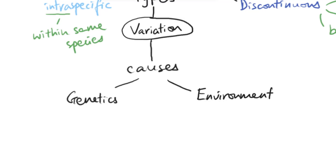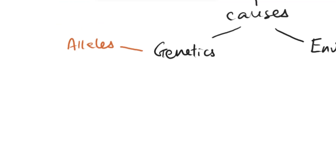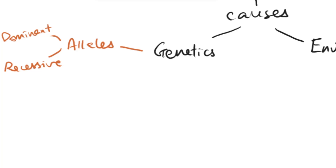Specifically, we're going to look at the genetic causes of variation and the different things within that which can cause those differences. When it comes to differences in genes, you can think about alleles — different versions of the same gene. We can have dominant alleles, which are alleles that will express their phenotype if present, and we can also have recessive alleles, where the phenotype can only be expressed if there are two of them. This already gives a mixture of different variations within different organisms.